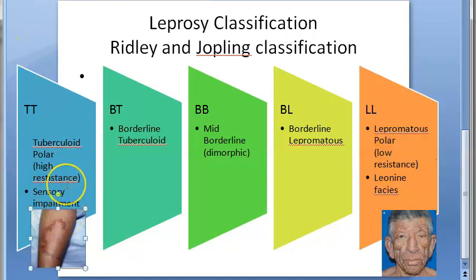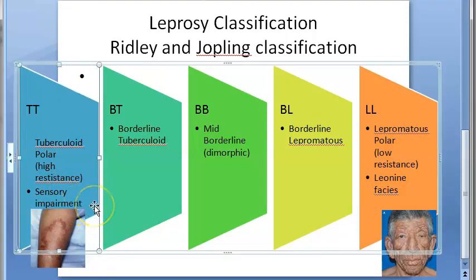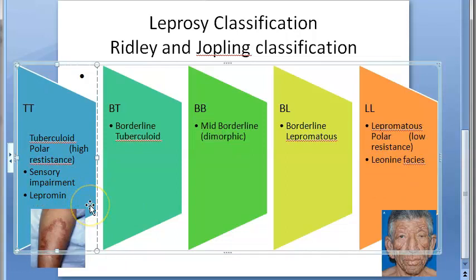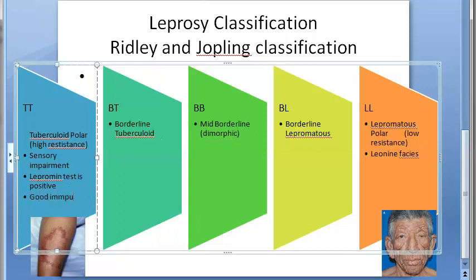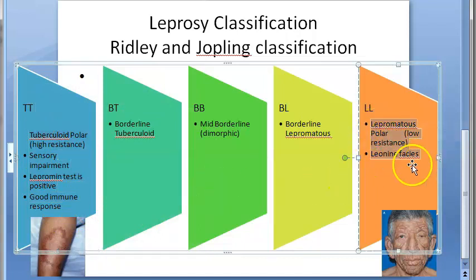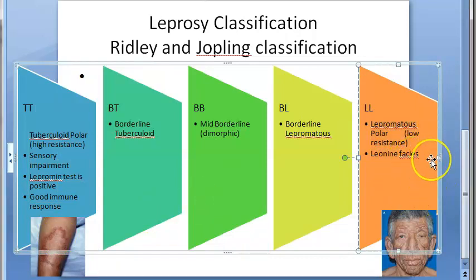In tuberculoid leprosy, the lepromin test is positive — this is a good sign, meaning the person has a good immune response and high resistance against the infection. In lepromatous leprosy, the lepromin test is negative, indicating suppressed immunity and low resistance.